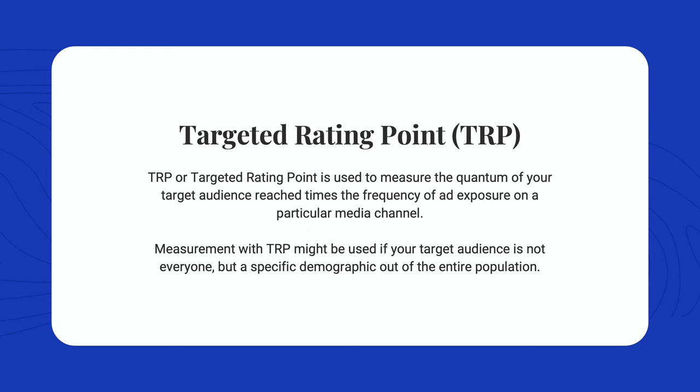As a brand, you might not be interested in television programs reaching the entire population — you might be interested in programs which reach a particular audience that is important to you. That's where the next term, TRP, becomes important. TRP, or Targeted Rating Point, is used to measure the quantum of your target audience reached times the frequency of ad exposure on a particular media channel. TRP is used when your target audience is not everyone, but a specific demographic out of the entire population.